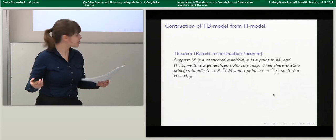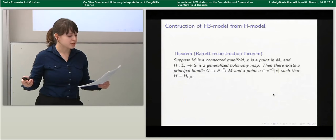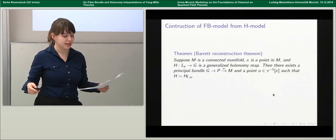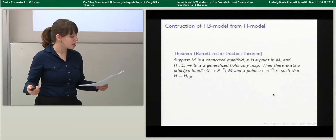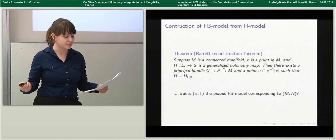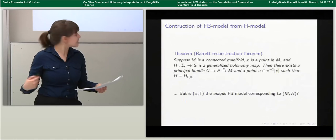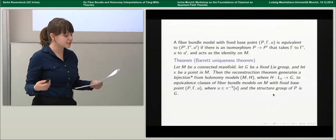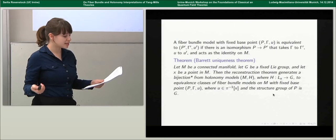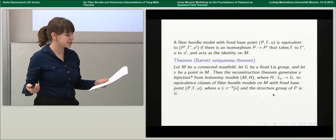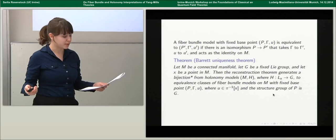Barrett's construction involves the elements of the principal bundle corresponding to certain equivalence classes of ordered pairs, each consisting of a curve on spacetime and an element of the holonomy group. We're also interested in whether this principal bundle and connection pair is the only one up to principal bundle isomorphism with a holonomy map corresponding to h. Barrett does have a uniqueness theorem: the state space of the fiber bundle interpretation consists of triples of a principal bundle, a principal connection, and a base point — where such triples are equivalent if there's a principal bundle isomorphism between them that matches the connections and base points and acts as the identity on spacetime. He claims the reconstruction theorem generates a bijection between holonomy models and such equivalence classes of base-pointed fiber bundle models.